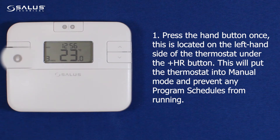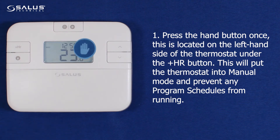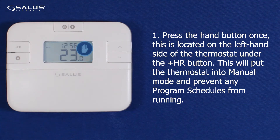Step 1: Press the hand button once. This is located on the left-hand side of the thermostat under the plus HR button. This will put the thermostat into manual mode and prevent any program schedules from running.